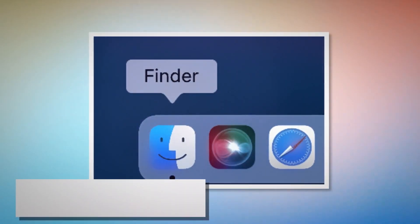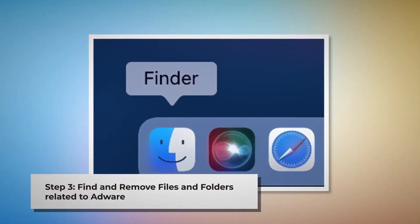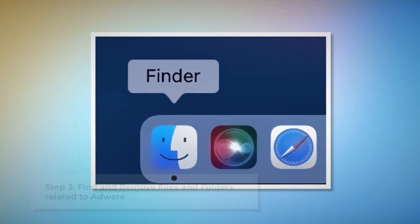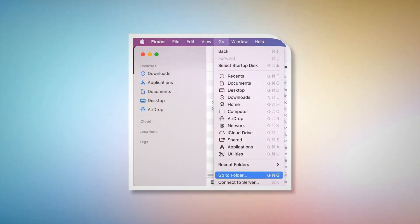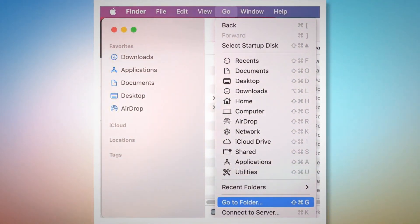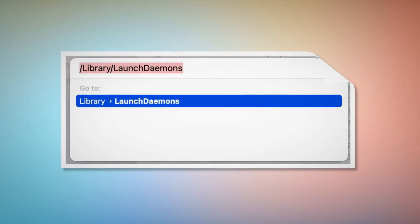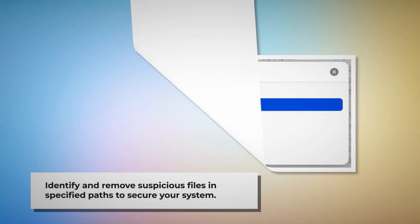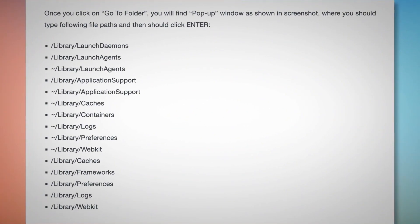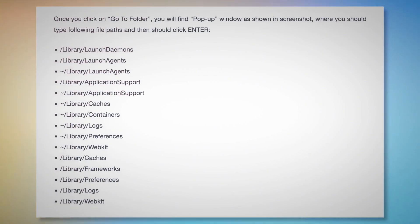Step 3: Find and Remove Files and Folders related to Adware. Firstly, make sure you are in the Finder folder. If not, follow the steps as mentioned in Step 2. Once you are in Finder, click on Go at the top menu bar and then Go to Folder on the drop-down menu, as shown in the screenshot. Once you click on Go to Folder, a pop-up window will appear where you should type these file paths and then press Enter. Enter paths such as Library, LaunchDaemons, LaunchAgents, Application Support, and so on, as shown here. Then look for suspicious or malicious files and move them to Trash.